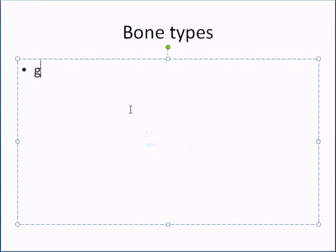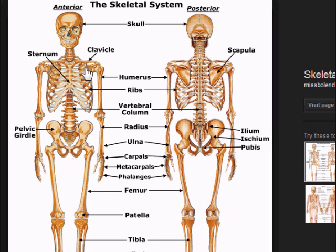Flat bones are things like your scapula. As you can see in the image, the scapula is laid down flat. The skull bones are also flat — they're not long, short, or irregular. If you cut them up into pieces, they would essentially be flat. So those are flat bones.